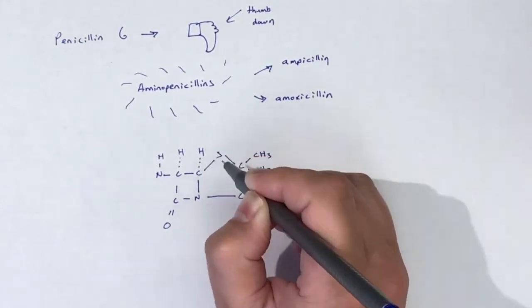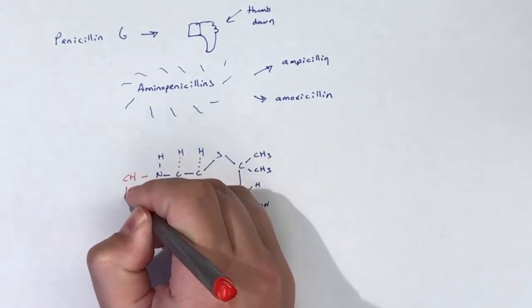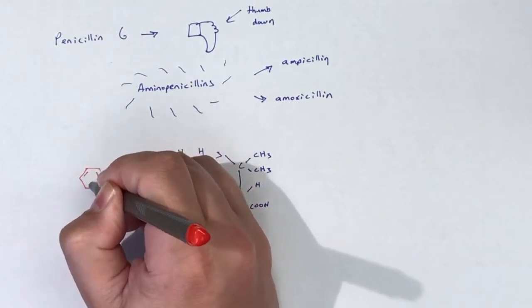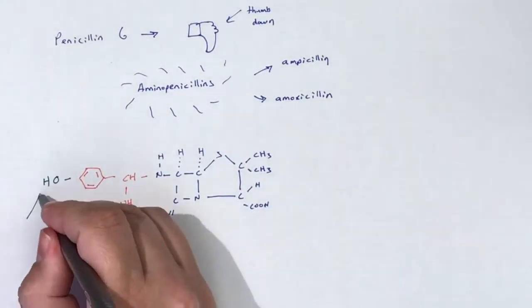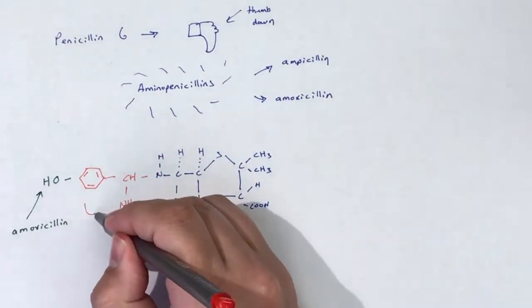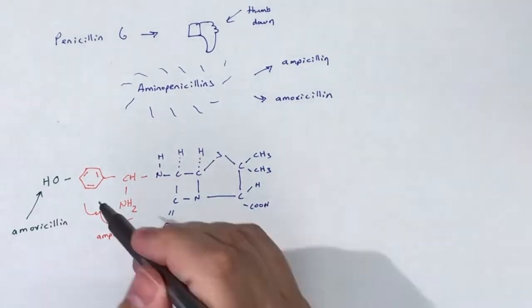Examples of aminopenicillins include ampicillin and amoxicillin. The name for this group of compounds stems from their structure. The addition of the amino group labels these compounds as aminopenicillins.